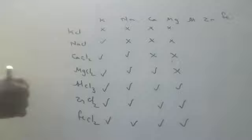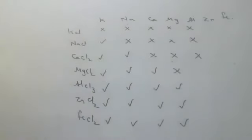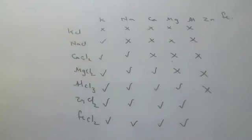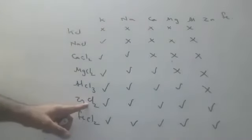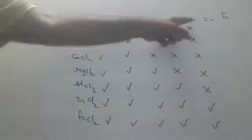Aluminium with KCl? No. With NaCl? No. With CaCl2? No. With MgCl2? No. With aluminium itself? No. With ZnCl2? Yes. With FeCl2? Yes. Yes means it can displace — aluminium can displace zinc from its chloride; aluminium can displace iron from its chloride.